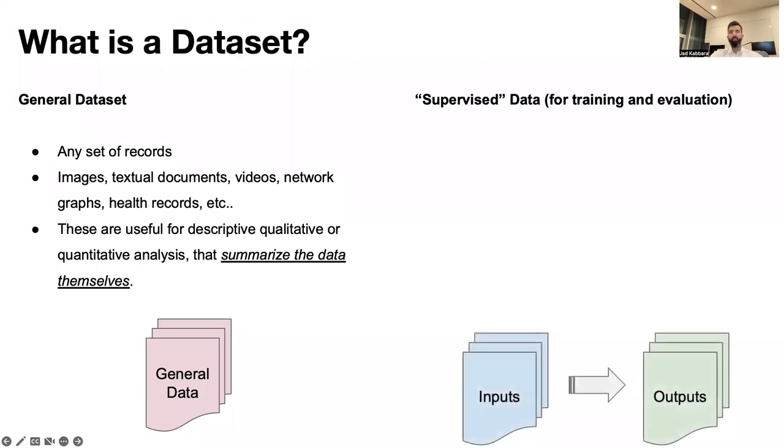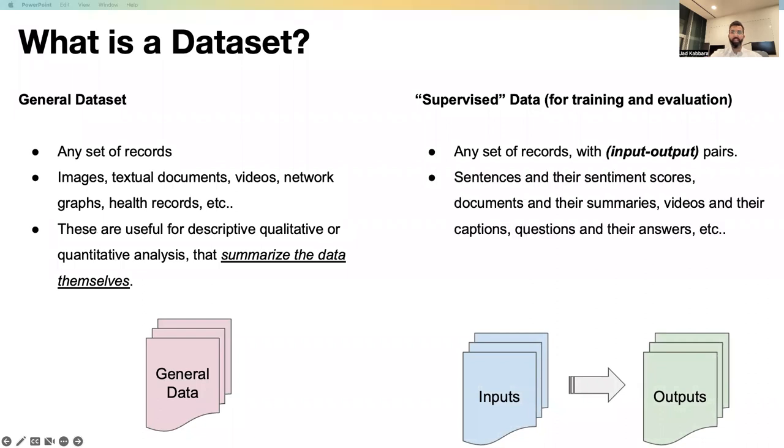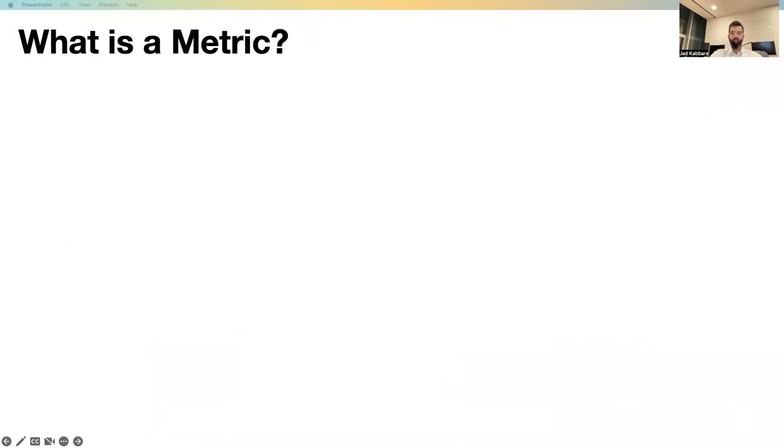From the point of view of supervised machine learning, a dataset is a set of records that has input-output pairs. For example, sentences and their sentiment scores, documents and their summaries, videos and their captions, questions and their answers. And these are useful for evaluating machine learning models under the supervised learning paradigm.